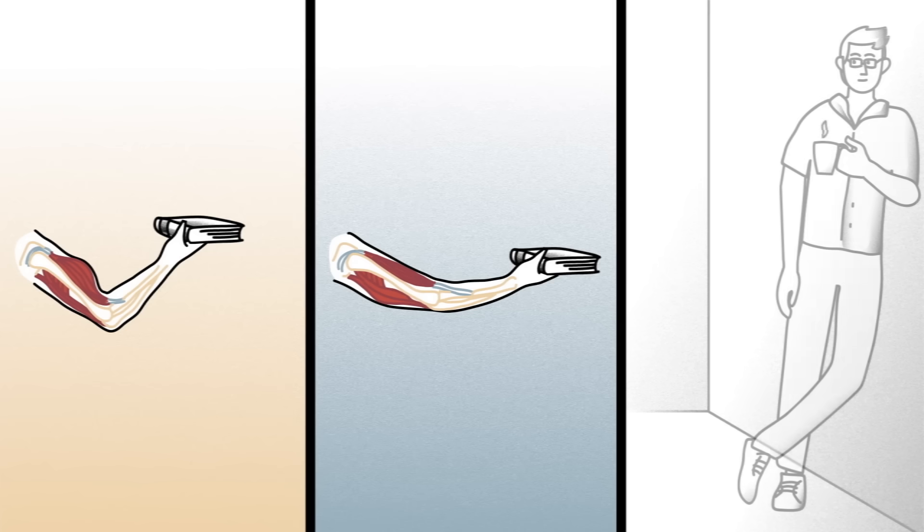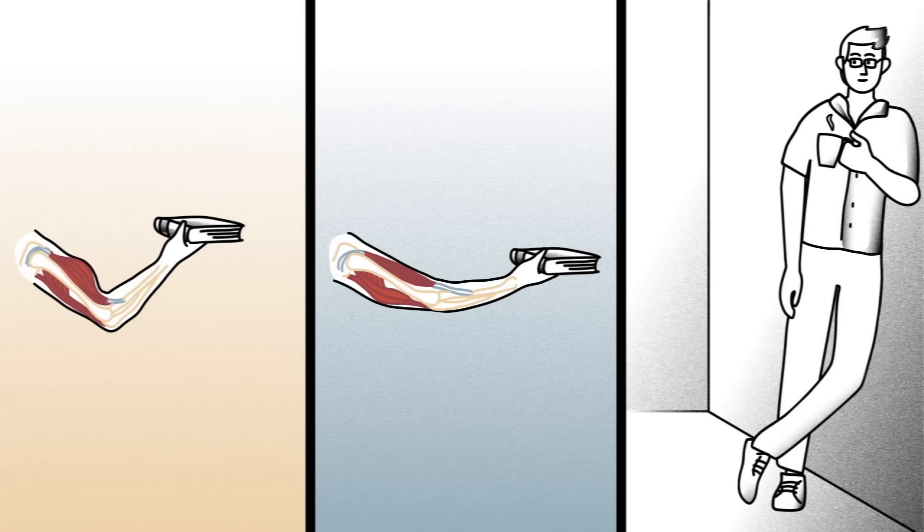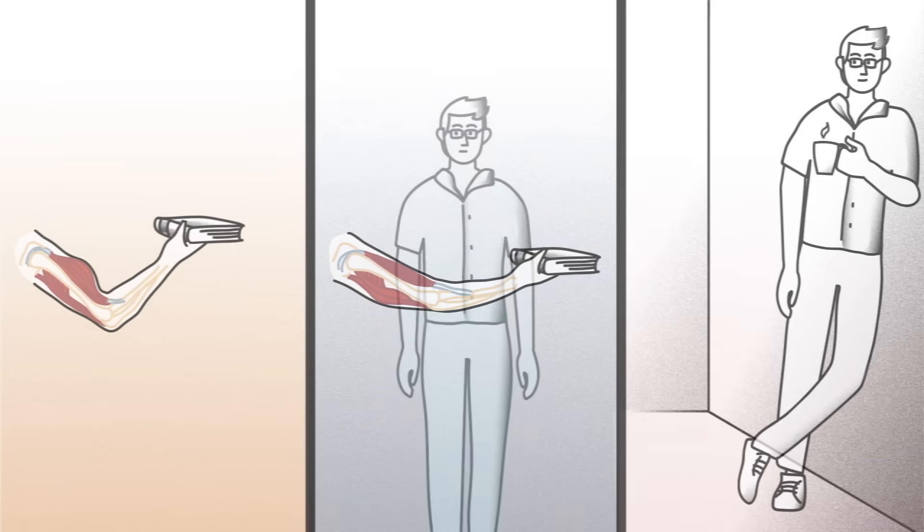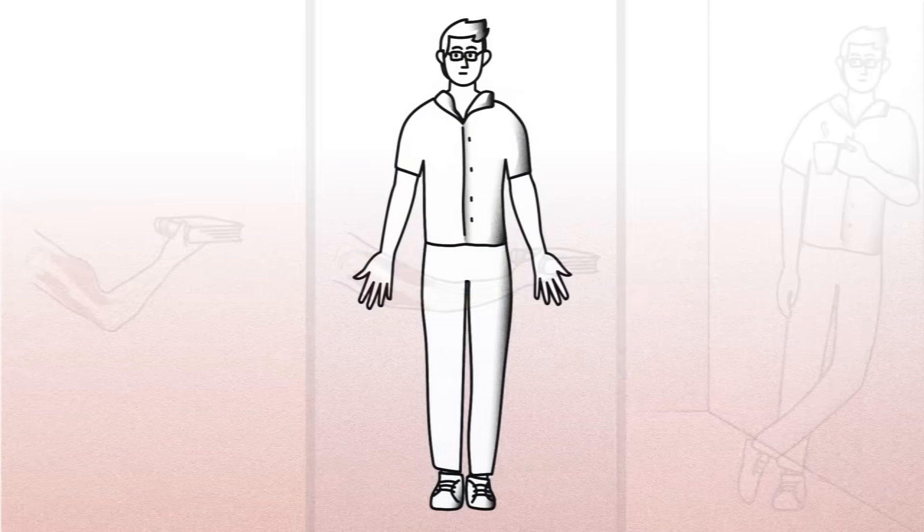The third type of contraction creates a stabilizing force. In these cases, the muscle fibers don't change in length, but instead keep the muscles rigid. This allows us to grip a mug of coffee or lean against a wall. It also maintains our posture by holding us upright.